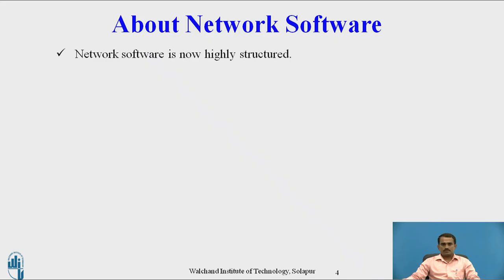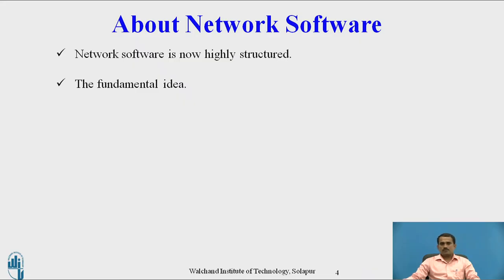About network software. Network software is now highly structured because while transmitting any data from one place to another place, the user should have to use any one of the software. The fundamental idea is that nowadays the software can be used for store and forward purpose. It means, before transmitting the data, the user should store the data they want to transfer, and then forward it. If the data is dropped or discarded, then the user has to check the original data in the stored location.